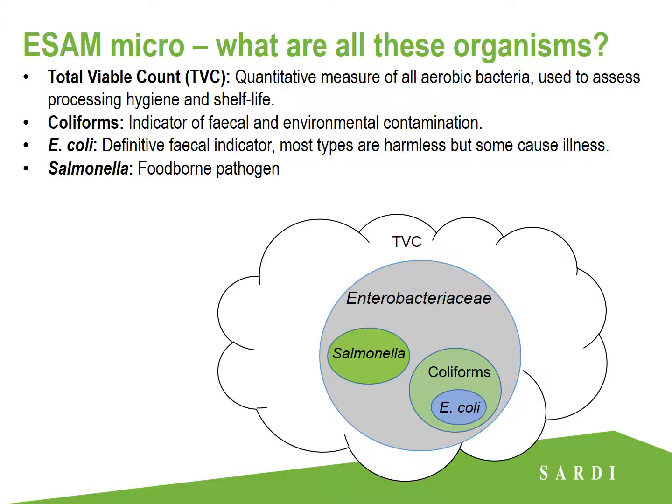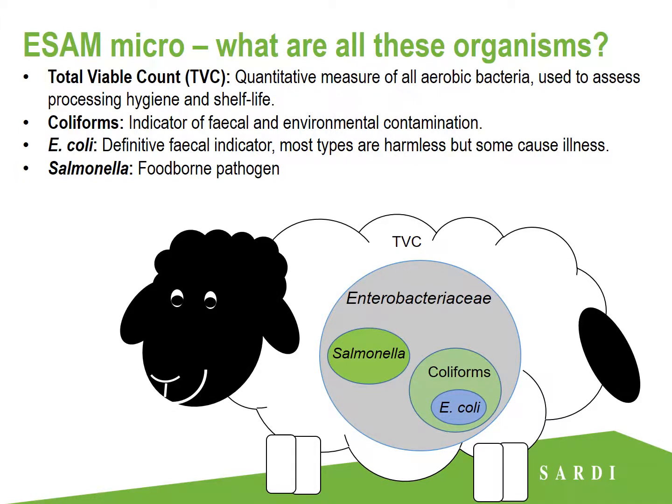Lastly, we have Salmonella, which, while rarely detected in Australian red meat, is still a globally significant foodborne pathogen and one that we must contend with. And that's how all the microbes interact and are related to each other within our processed animals.